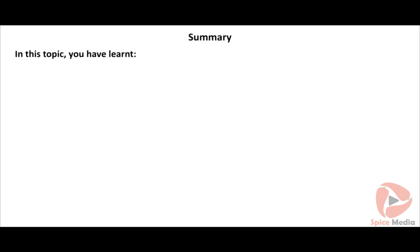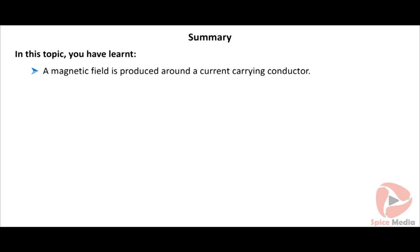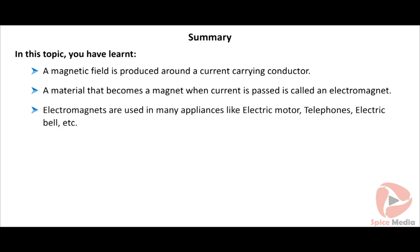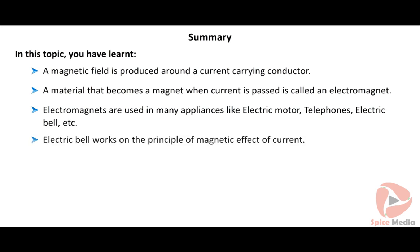In this topic, you have learned that a magnetic field is produced around a current-carrying conductor. A material that becomes a magnet when current is passed is called an electromagnet. Electromagnets are used in many appliances like electric motor, telephones, and electric bell. Electric bell works on the principle of the magnetic effect of current.